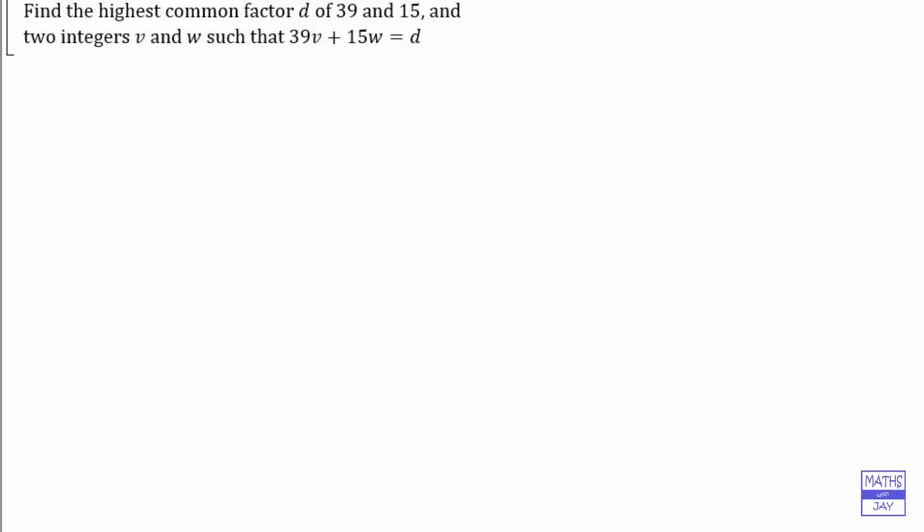All we need to do is use an extension to the GCD command that we saw earlier. Let's just see what we need to do here. We just key in first of all GCD and then EX, so it's an extension, and we then put in our brackets and then all we need to do is put in the two numbers, so we've got 39 and 15.